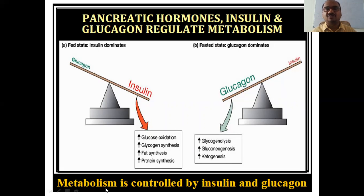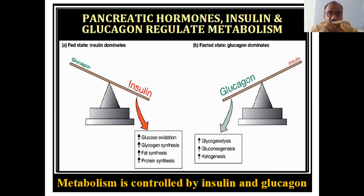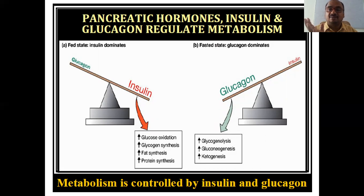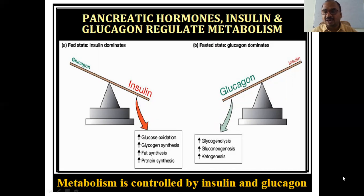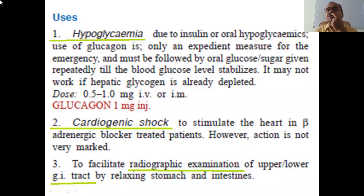The metabolism of the body is controlled by insulin and glucagon. The total body metabolism — body metabolic rate — is controlled by only these two things: insulin and glucagon.